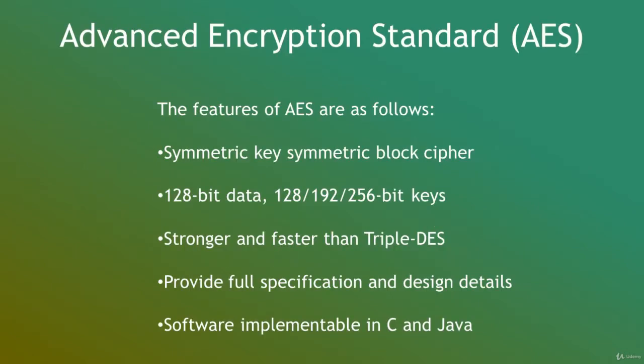The more popular and widely adopted symmetric encryption algorithm likely to be encountered nowadays is the Advanced Encryption Standard, or AES. It is found to be at least six times faster than Triple DES. Recall that a replacement for DES was needed as its key size was too small. With increasing computing power, it was considered vulnerable against exhaustive key search attacks. Therefore, Triple DES was designed to overcome this drawback, but it was found to be slow.